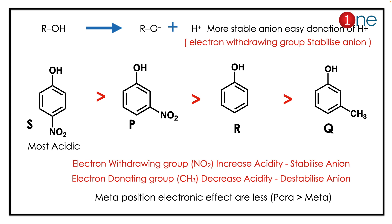The answer lies in anion stability. Acidity means the alcohol donates H⁺ and produces an alkoxide ion, so the stability of the alkoxide ion decides the acidity of the compound. Electron-withdrawing groups stabilize the anion, so the alkoxide anion should be stable for easy donation of H⁺.